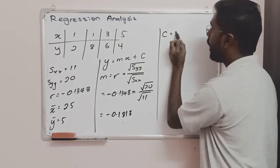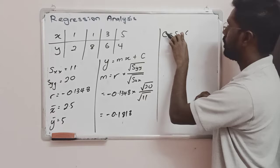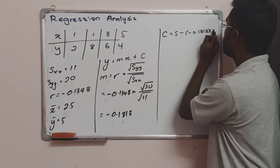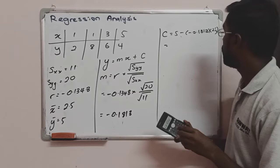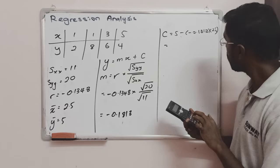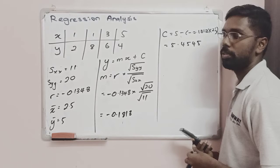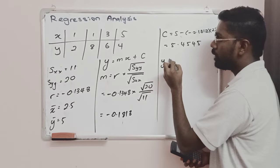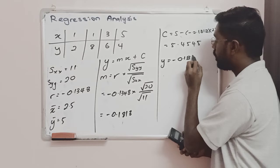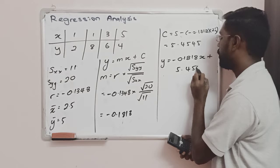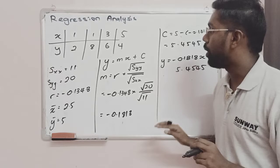To find C, it is going to be the mean of Y, which is 5, minus M multiplied by the mean of X. That is 5 minus negative 0.1818 times 2.5, which gives 5 plus 0.1818, equalling 5.4545. Therefore, the equation of the linear regression is y equal to negative 0.1818x plus 5.4545.